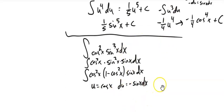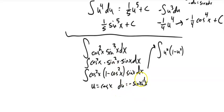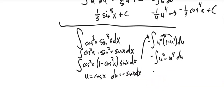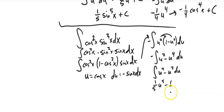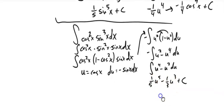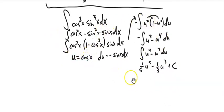Doing the substitution: u squared times one minus u squared, and negative sine x dx is du. Distributing: u squared minus u to the fourth. Putting the negative in turns one term negative and the other positive. Integrating: one fifth u to the fifth minus one third u cubed plus a constant. Since u was cosine, this is one fifth cosine to the fifth minus one third cosine cubed plus C.